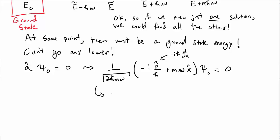Recall that p̂ is -iℏ d/dx. So just substituting that into this relationship for the ground state, I get ℏ dψ₀/dx + mωx ψ₀ must be equal to zero. So this thing in parentheses must be equal to zero.